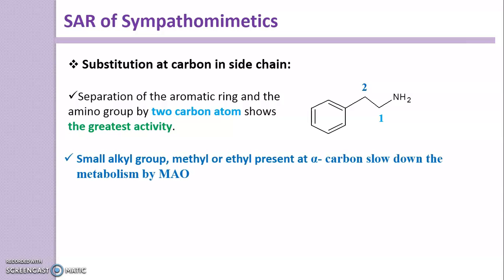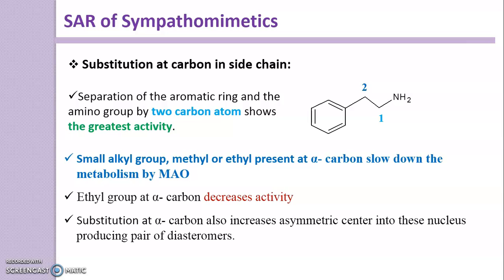A small alkyl group such as methyl or ethyl at the alpha-carbon slows down metabolism by MAO — monoamine oxidase — another enzyme responsible for the inactivation of Sympathomimetic drugs. An ethyl group at the alpha-carbon decreases activity. Substitution at the alpha-carbon also introduces an asymmetric center, producing a pair of diastereomers.